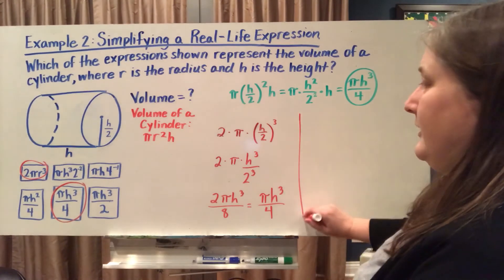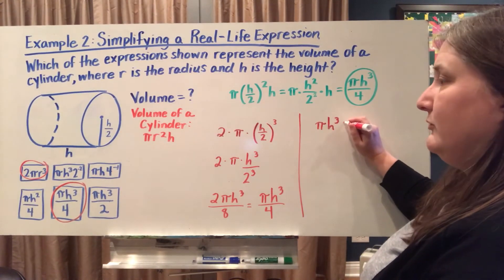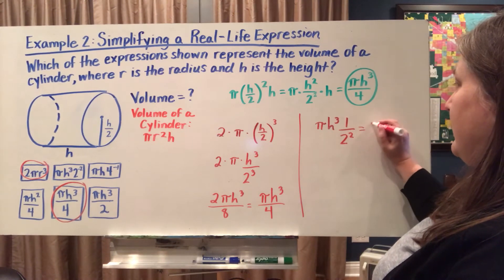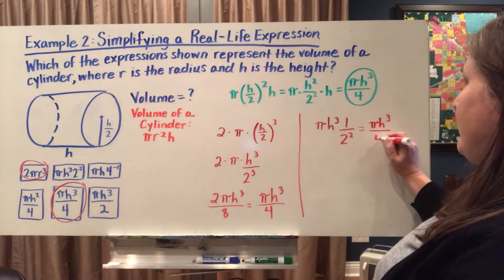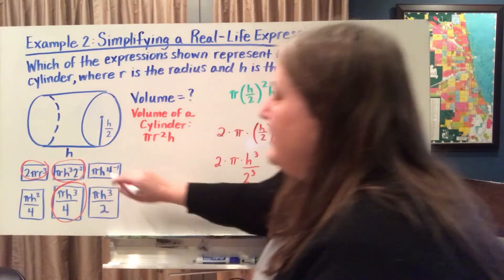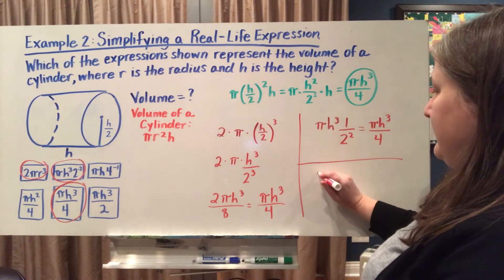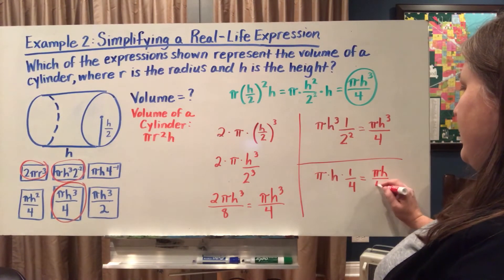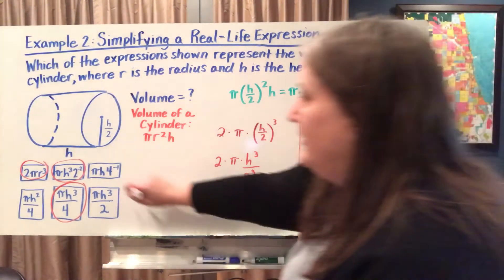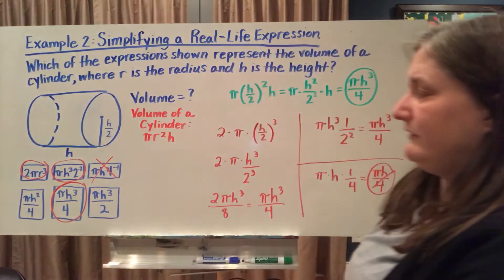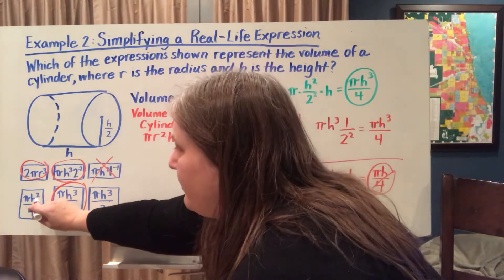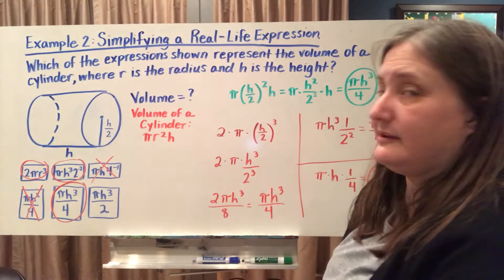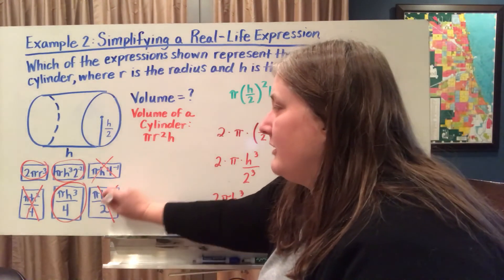Now let's check the remaining representations. Pi times h times 4 to the negative 1, or 1/4, gives pi times h over 4 — this won't work because I need h to the 3rd power. The next one is automatically out because it looks exactly like ours except the powers differ — I need h to the 3rd and this one has h squared. The last one also looks identical to mine except the denominator is different, and since there's no simplifying to do and the denominators don't match, this one is also not going to work.